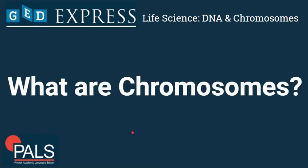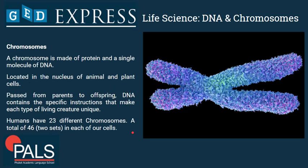What are chromosomes? I'm sure most of you have seen a picture of this X-shaped molecule — and yes, that is a chromosome. The chromosome is made of protein and a single molecule of DNA, and it's located in the nucleus of animal and plant cells. Chromosomes are passed from parents to offspring and from one cell to another during cell replication. Humans have 23 different chromosomes, a total of 46, in two sets in each of our cells.